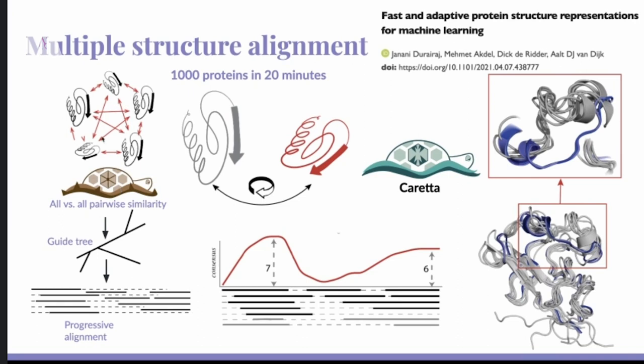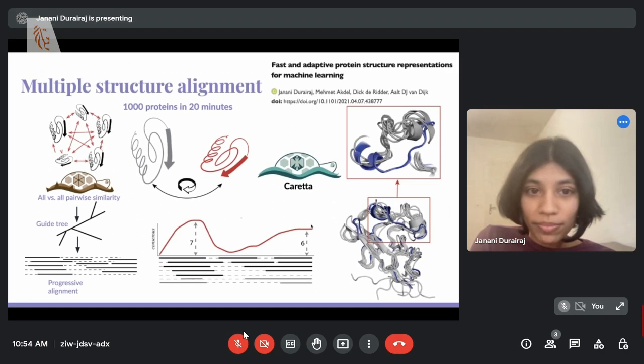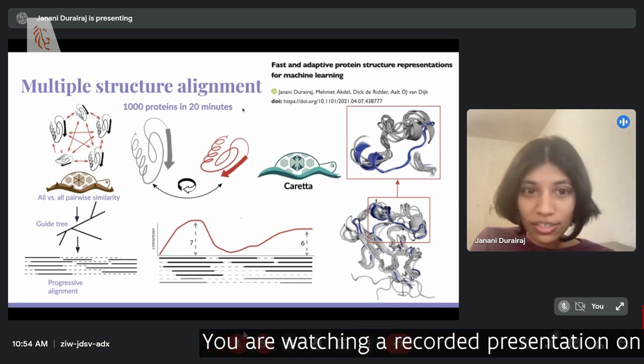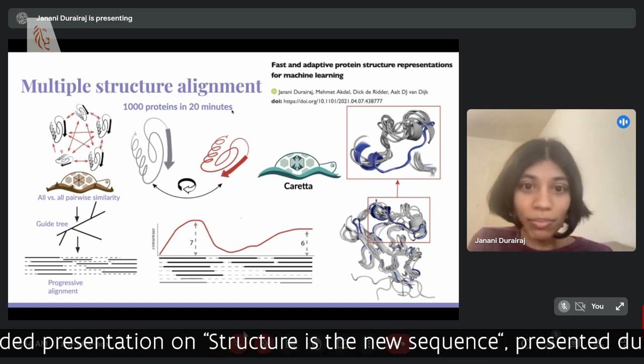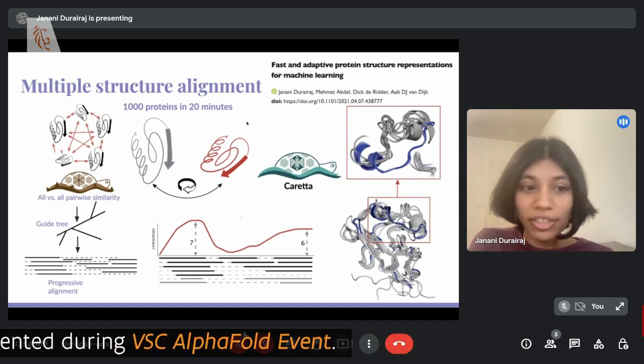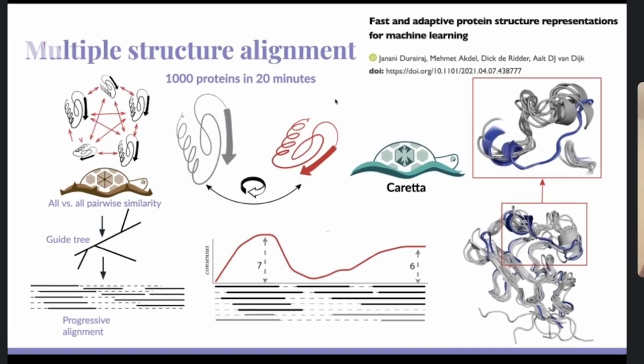So first of all, the main bottleneck in multiple structure alignment is deciding which pair of proteins to align at each step. Because you start with your whole set of proteins, you choose a pair to align, you align them, and then you start adding to that alignment. And so choosing that usually requires all versus all alignment, which takes a lot of time. So we've now replaced that with all versus all shape-mer matching, which is what is done in a lot of multiple sequence alignment methods like Clustal and so on. And we've also added some feedback loop in the alignment process so that regions which are well aligned, you don't have to make as gappy. And that is really good for if you want to use your alignment as an input for machine learning tasks. Yeah, so this is TOPAZ, it's quite fast. Still, of course, it can be improved.